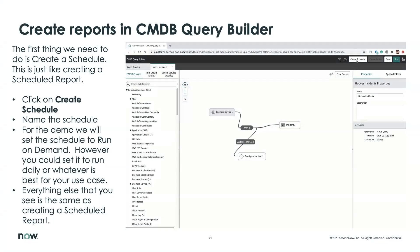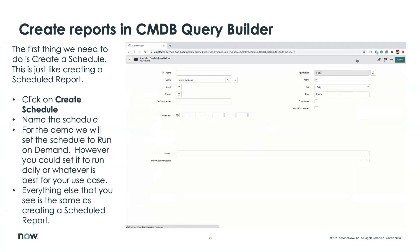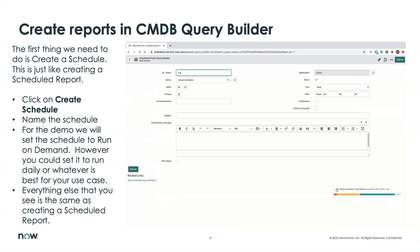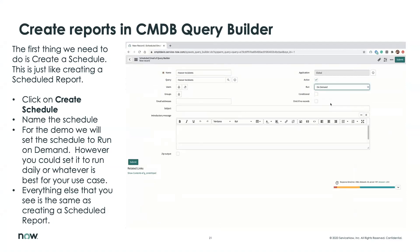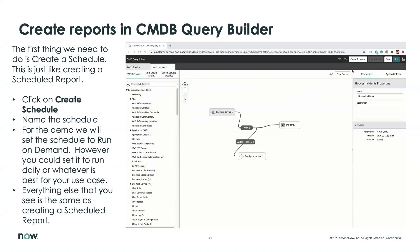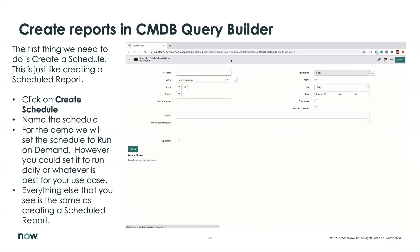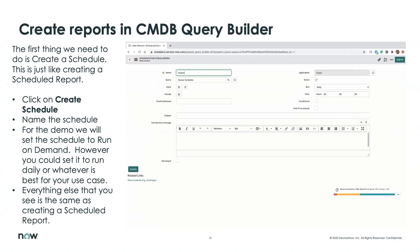To create a report from the CMDB Query Builder, it's essentially just creating a scheduled report — if you've created scheduled reports before, this screen will look very familiar. It passes over the name and the particular query, and then you can decide when you want to run it. For our case, we're running it on demand, but you can schedule it to run as often as you'd like. Click Submit and you have it scheduled — it's that simple.